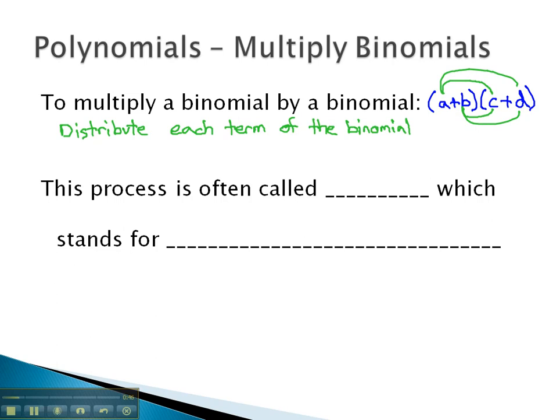This process is often called FOIL, which stands for first, meaning we multiply, distributing a through to the first term. O stands for outside, meaning we multiply a times the outside term.